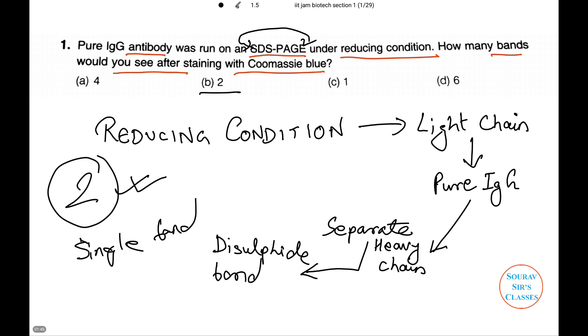And in the same way, two light chains formed the other single band. So, option B, two bands were obtained after staining with Coomassie blue. Let's see another question.